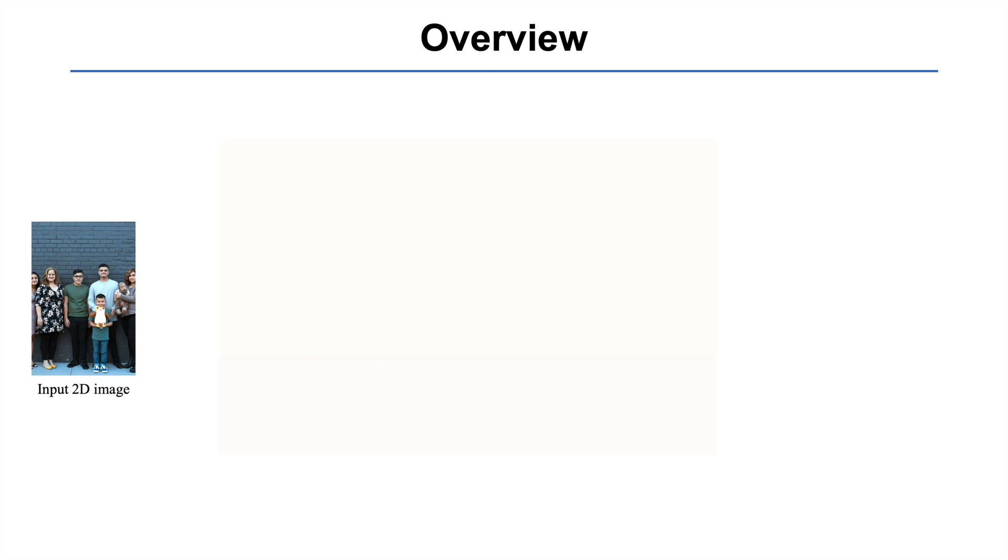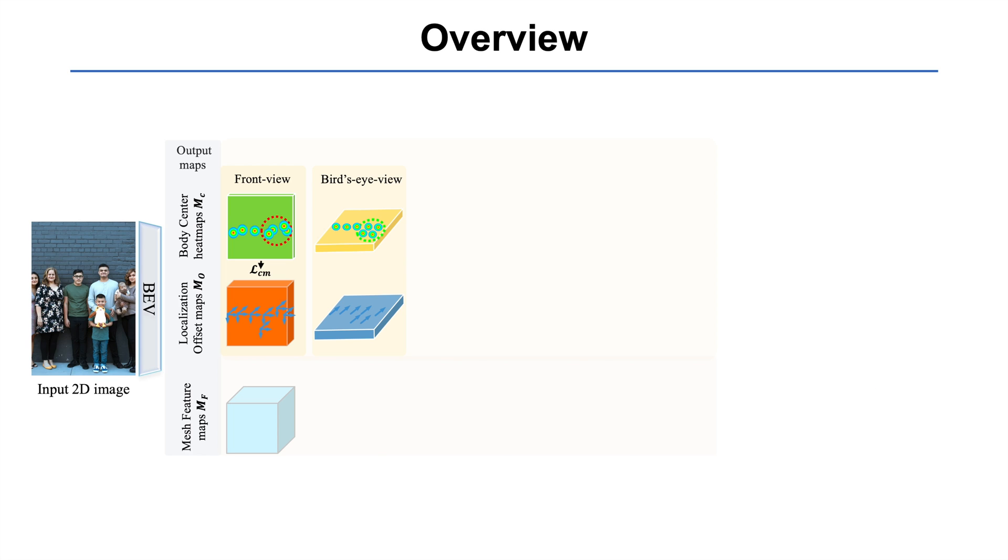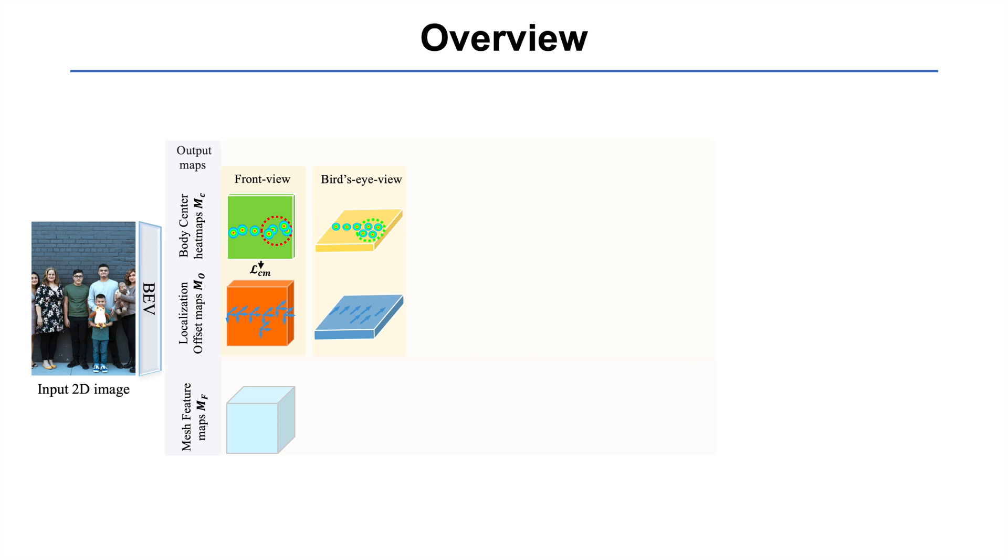Given a single RGB image, BEV outputs five 2D maps: two for coarse detection, two for fine localization, and one for mesh parameter regression. By composing the front view and the bird's eye view maps, we can obtain a 3D center map and a 3D offset map. The 3D center map represents the coarse 3D position of each detected body center.